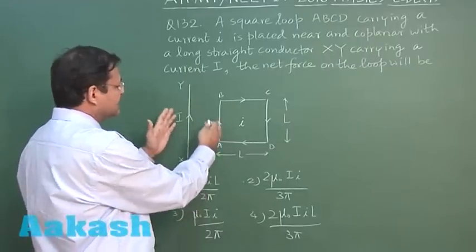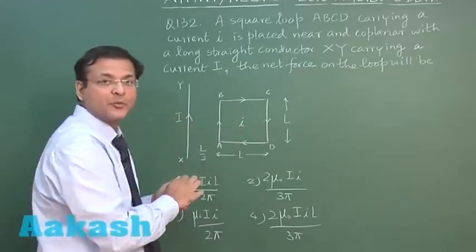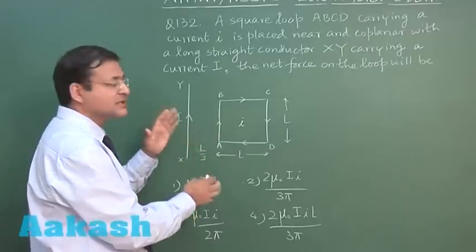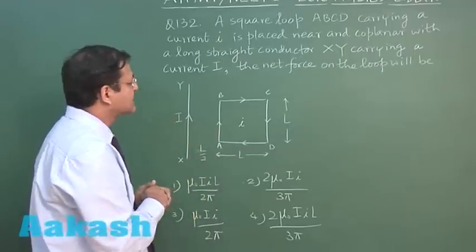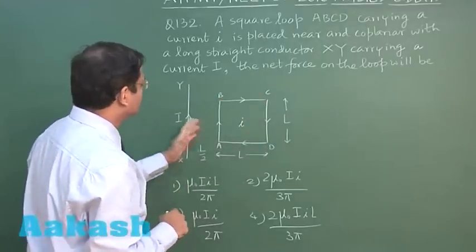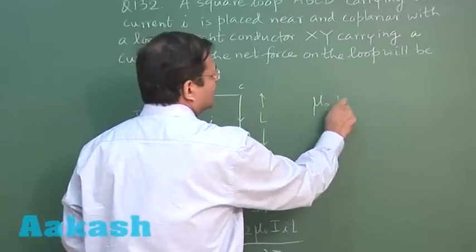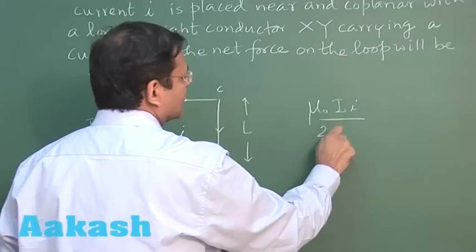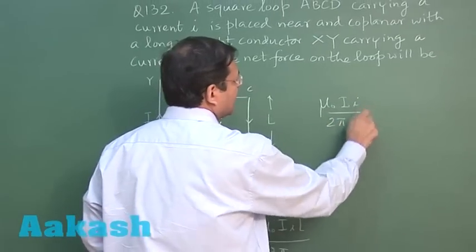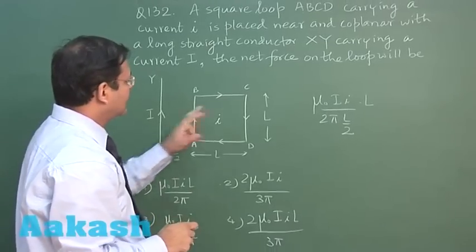If the current is in the same direction, there will be attraction, and here there will be repulsion because the currents are in opposite direction. These two wires will be experiencing equal and opposite forces; they will be cancelling. To find the net force on the loop, use the formula force per unit length: mu naught i1 i2 upon 2 pi d. In the first case, d is L by 2 multiplied by the length L.